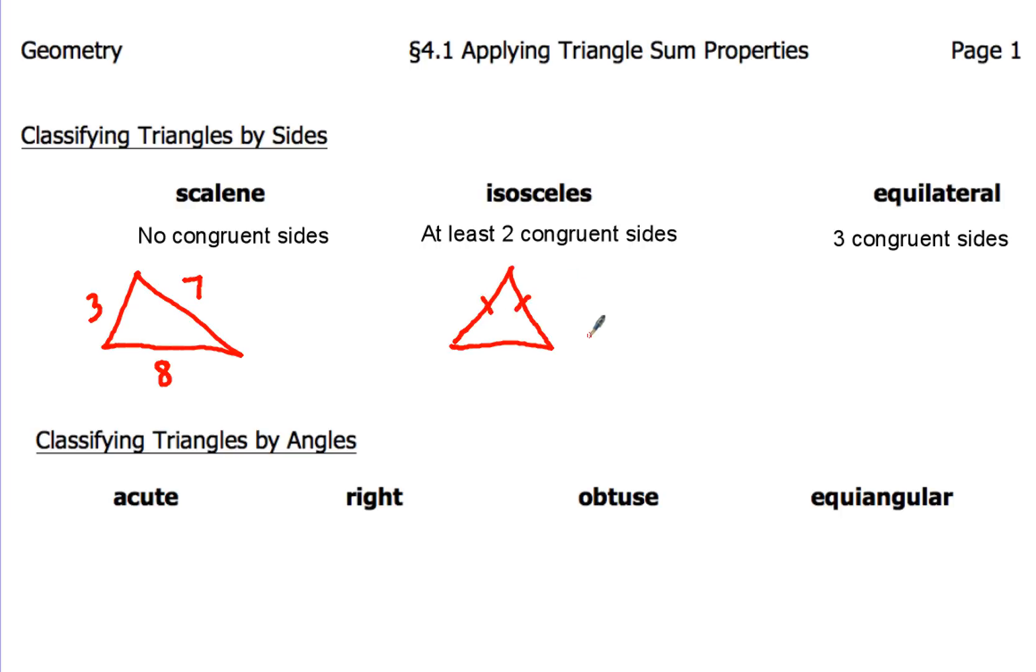Now what that means is that their lengths are going to be the same. So maybe one side is seven, and another side is also seven. So both of them would have the same length, or they could be denoted by the little hash marks that we see in the triangle.